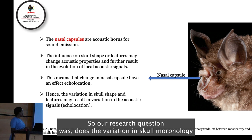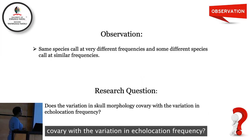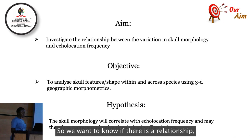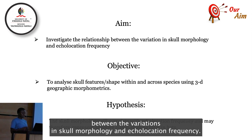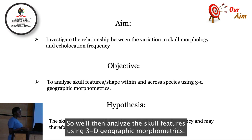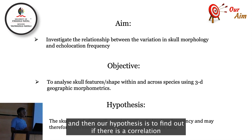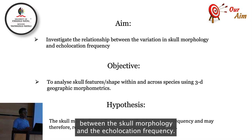Our research question is: does variation in skull morphology co-vary with variation in echolocation frequency? We want to know if there is a relationship. Our aim is to investigate the relationship between variation in skull morphology and echolocation frequency. We will analyze skull features using 3D geometric morphometrics, and our hypothesis is that there is a correlation between skull morphology and echolocation frequency.